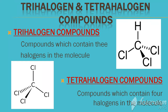If the number of halogen atoms is 4, then it will be a Tetrahalogen Compound.